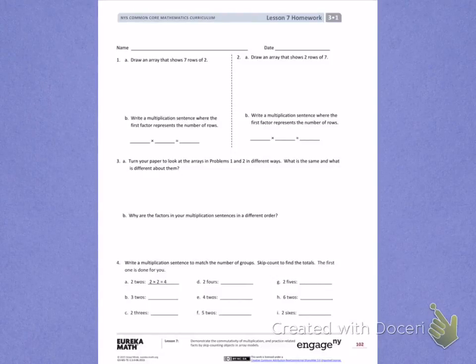This is Module 1, Lesson 7. Today's objective was to demonstrate the commutativity of multiplication and practice related facts by skip counting objects in array models.